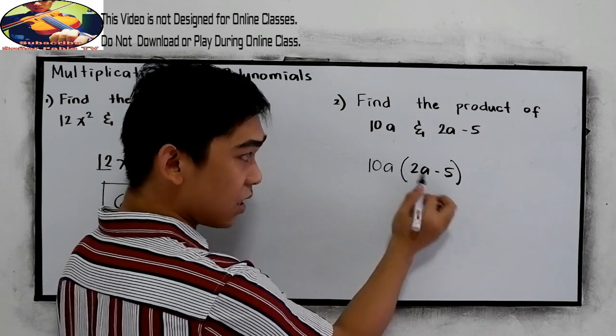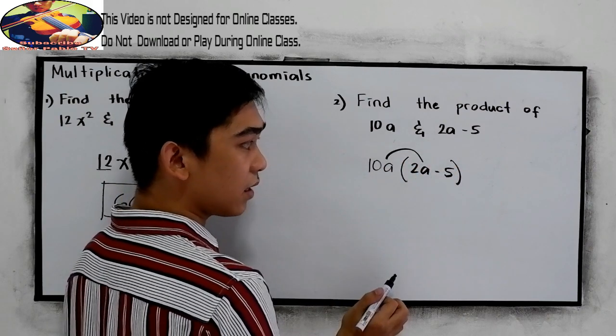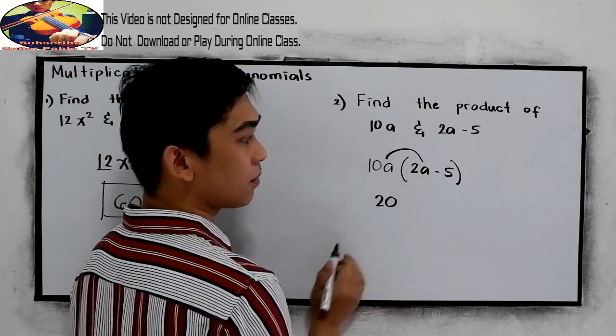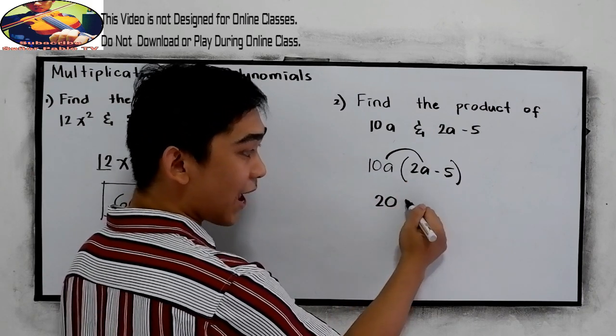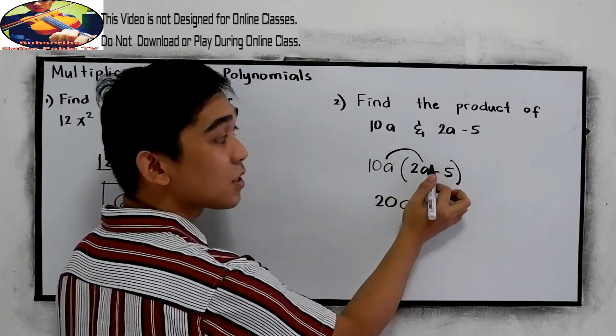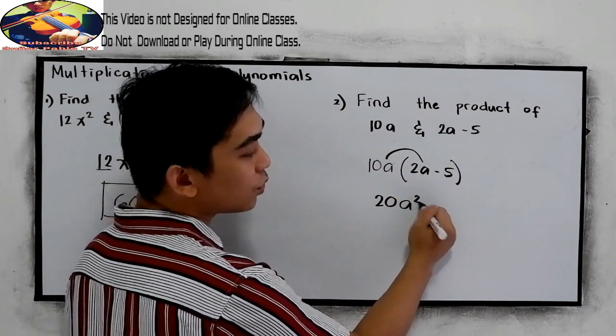10a times 2a, so 10 times 2a, so 10 times 2, that is 20. Copy a. So our exponent here is 1 plus 1, so we have 2.